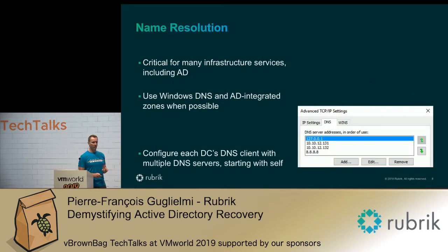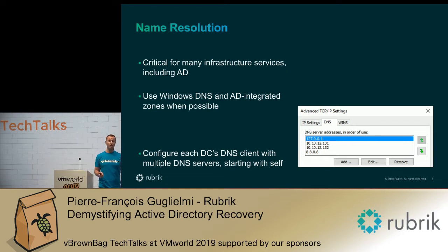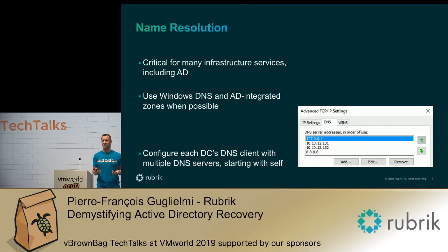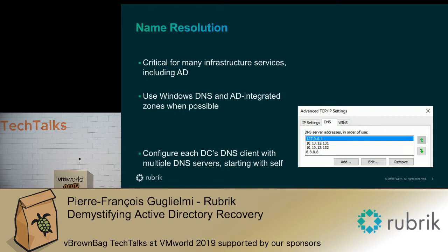The other thing that is really important is name resolution, especially DNS for Active Directory. If you're working with vSphere, you probably know that name resolution is quite important as well. You should try to use Windows DNS and in that case use Active Directory Integrated Zones — that would be the best case scenario. Make sure that your domain controllers are properly configured in terms of DNS client: the DNS client has to be configured with itself first, then with the other domain controllers, and maybe with an external source.